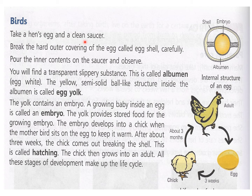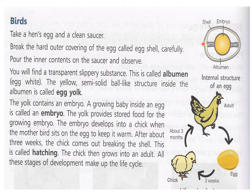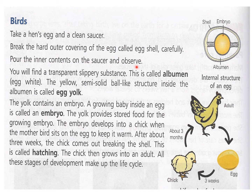Take a hen's egg and a clean saucer — saucer means plate. Break the hard outer covering of the egg, called the egg shell, carefully. You must have seen the egg is white outside; that is the shell of the egg. So when you make the internal structure of the egg, you will label it as shell — that is the outer white covering of the egg.